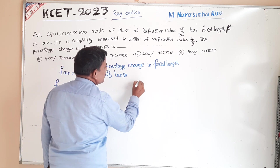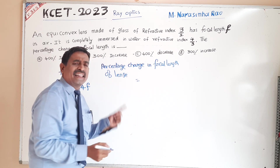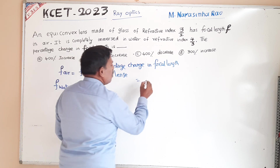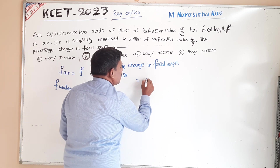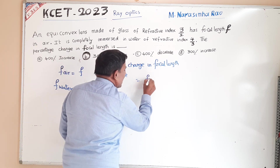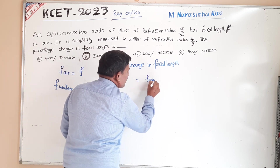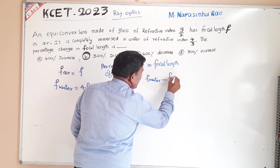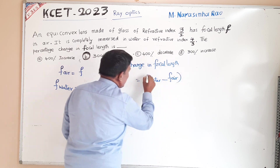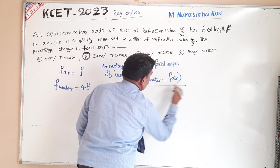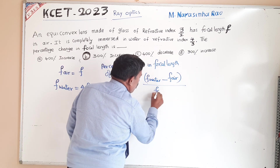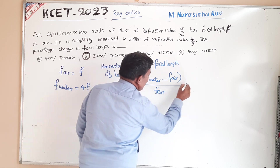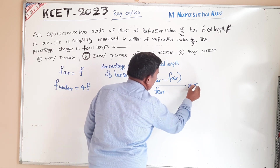Percentage change in focal length means: change in focal length = (focal length in water minus focal length in air) divided by focal length in air, multiplied by 100.